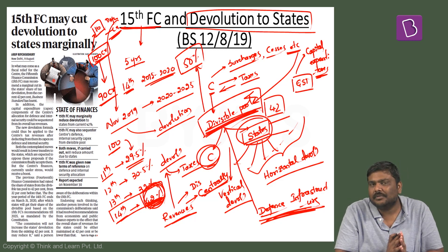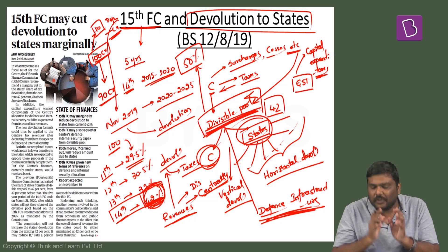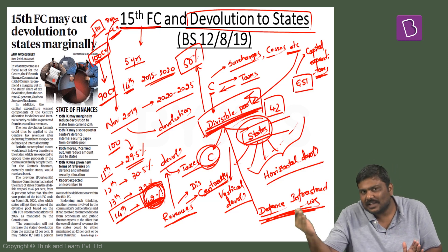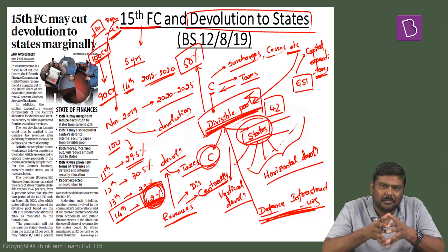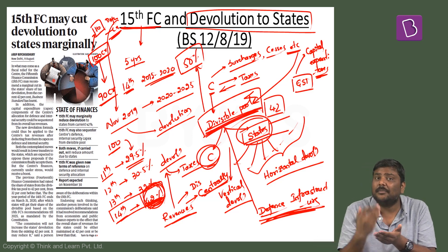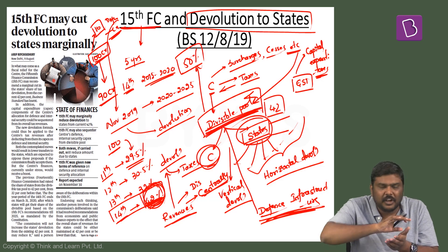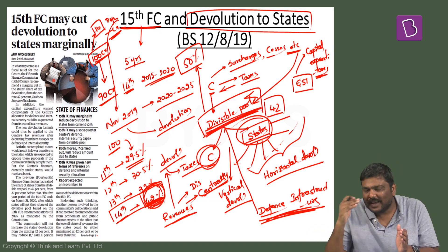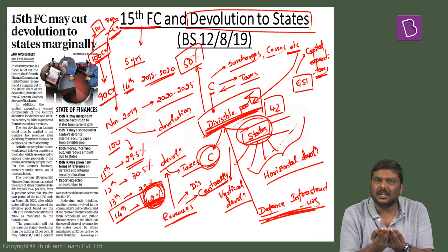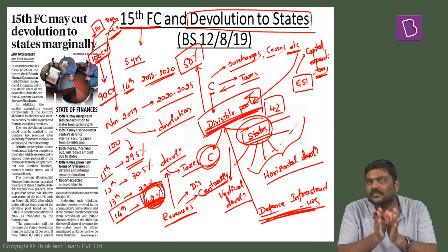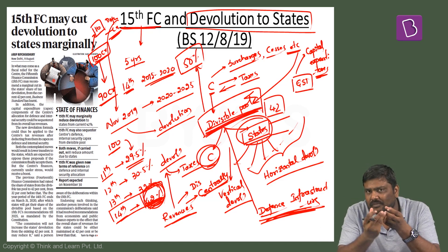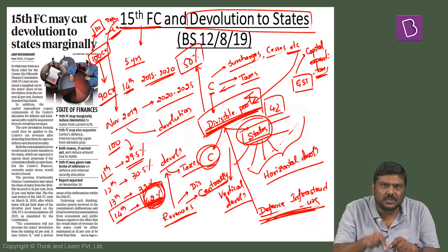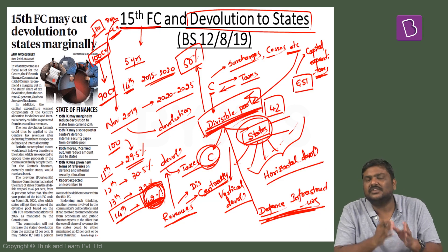If that recommendation is given by the 15th Finance Commission, a new devolution formula will also be given. Earlier, all taxes collected by the central government were put in the divisible pool and then distributed. But now, the 15th Finance Commission may recommend a new formula wherein certain capital expenditure is withdrawn from the divisible pool first, then whatever is left is distributed between center and states and then amongst the states. This means the devolution going to states might come down — which is why some states are opposed to this proposal.